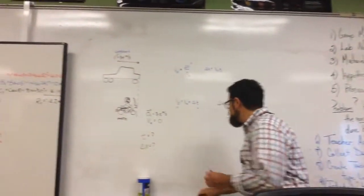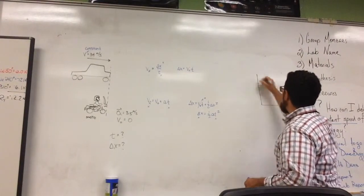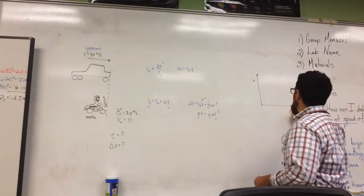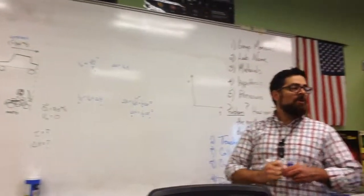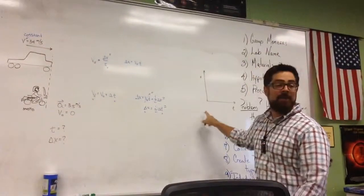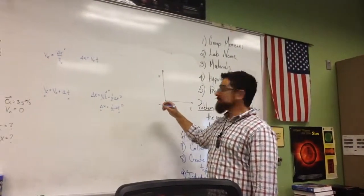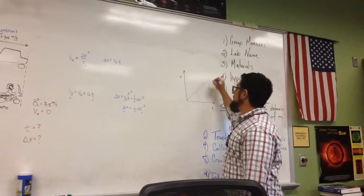By the way, before I even get to finishing this problem, what would the graphs look like of x position versus time, Casey? What would the graph look like for the truck of x position versus time? Okay, it's a straight line. Good, it's linear. It's going exactly like that.